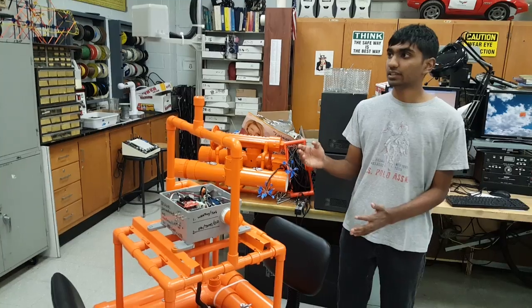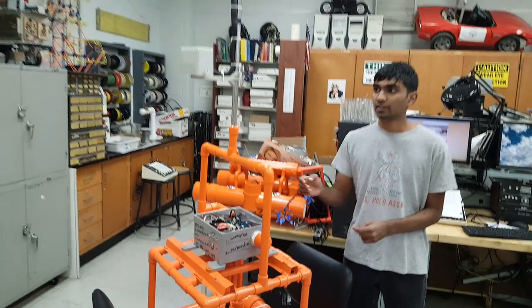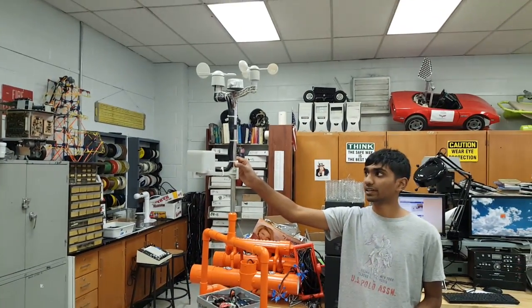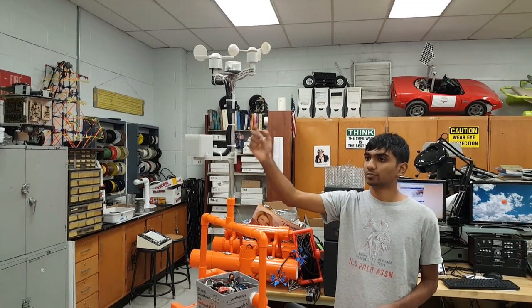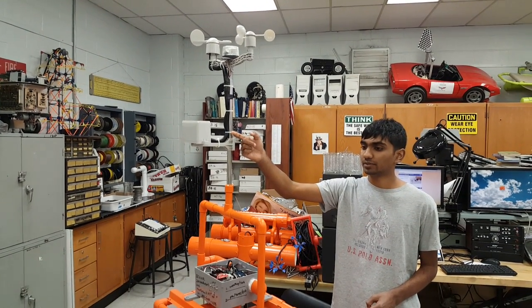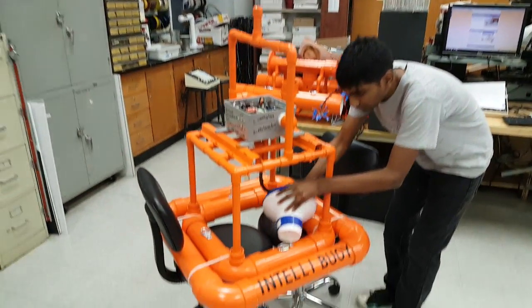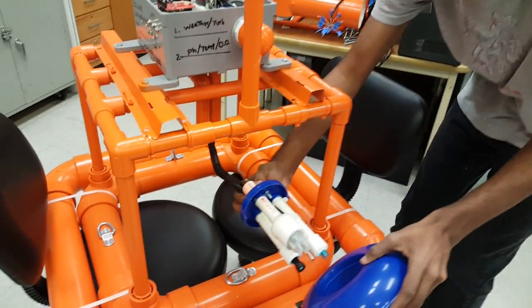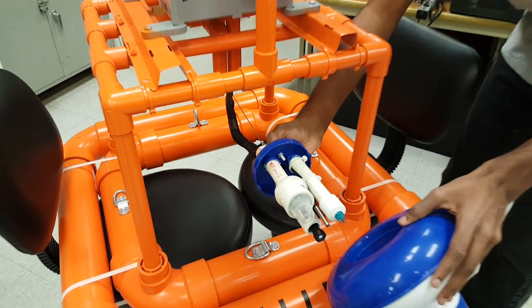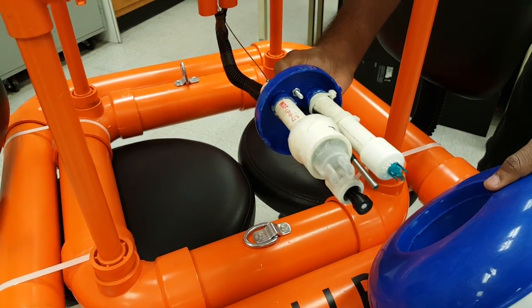So let's take a look at the components of the buoy. On top we have a weather vane which is used for measuring wind speed and accumulated rainfall and on the bottom we have a sensor pod which includes sensors that measure dissolved oxygen content, pH, turbidity, and water temperature.